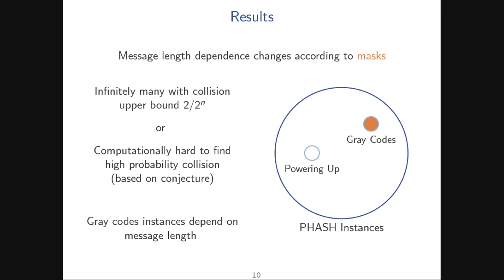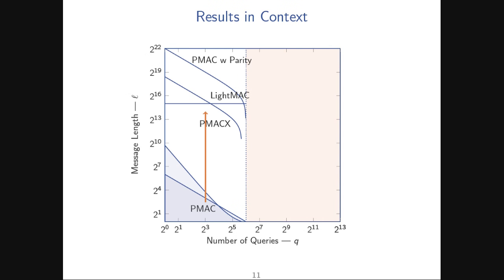Going back to the earlier picture: we've basically provided evidence that there are instances of PMAC out there which could belong with the other constructions that alleviate message-length dependence. But on the other hand, there are instances like gray codes where message-length dependence exists.